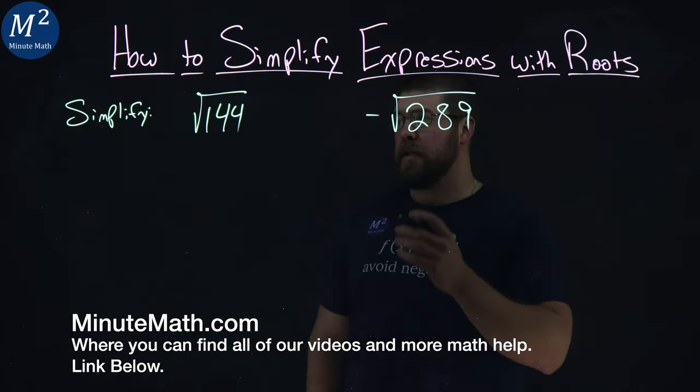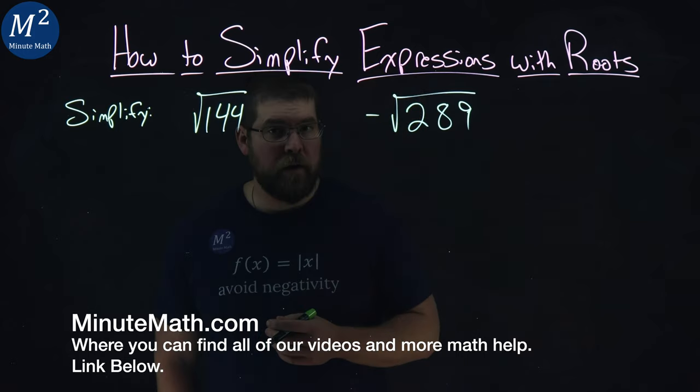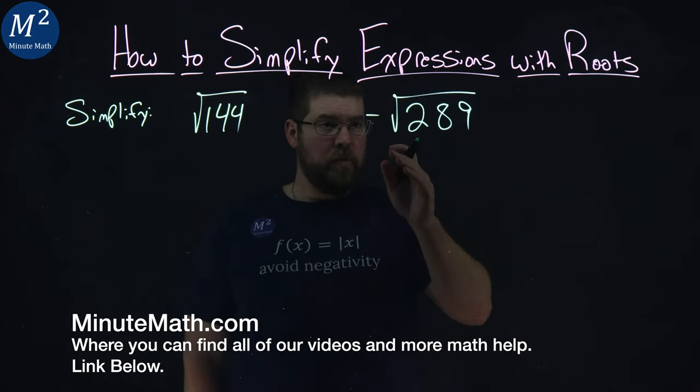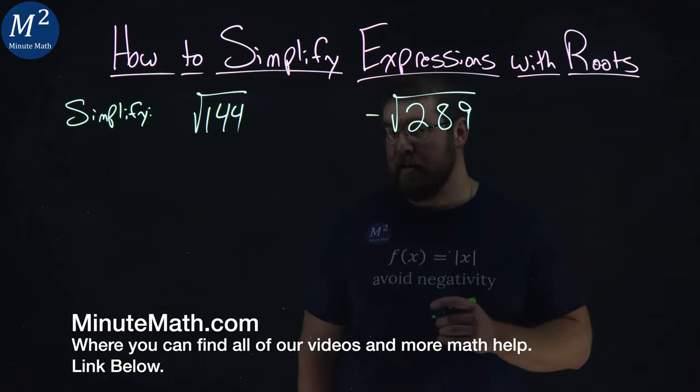We're given two problems here. We want to simplify the square root of 144 and the negative square root of 289.